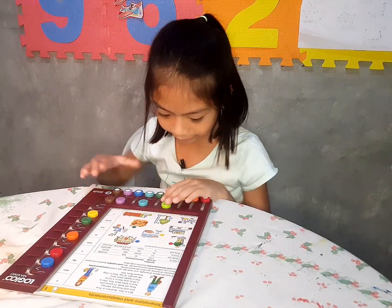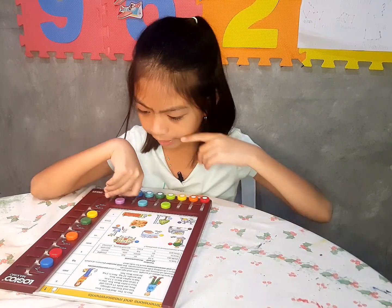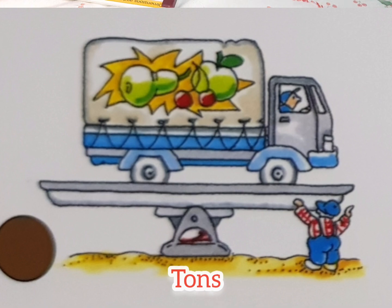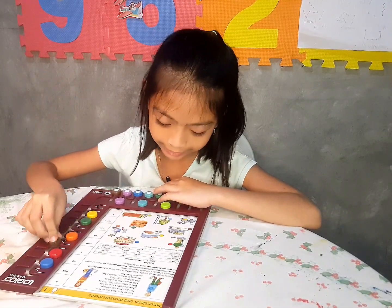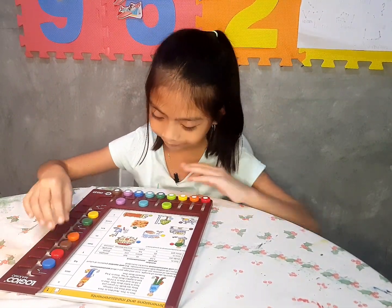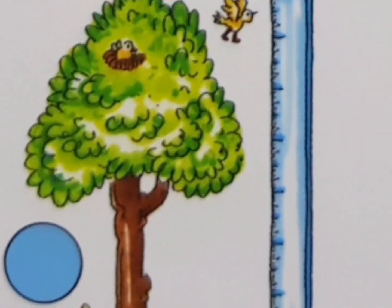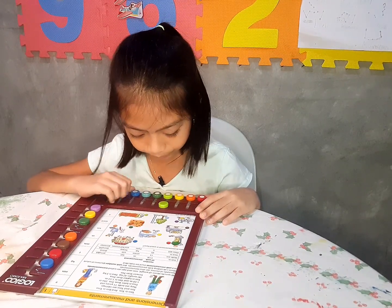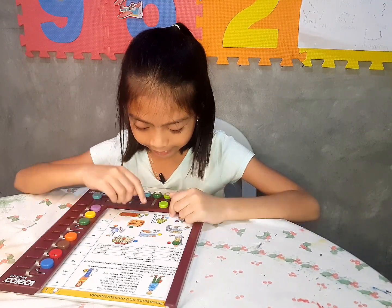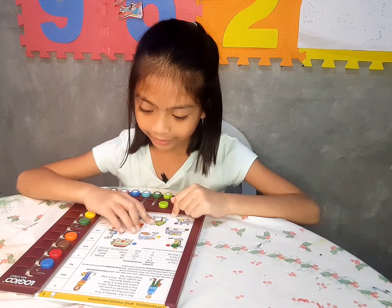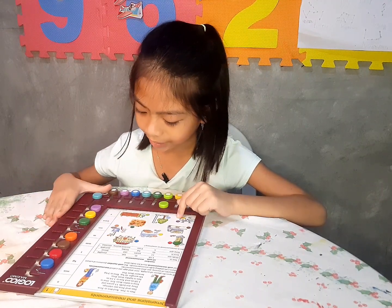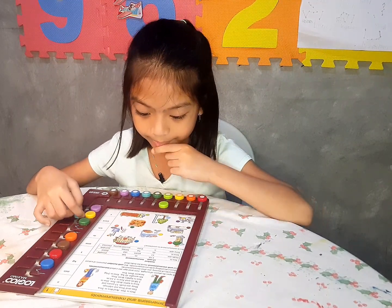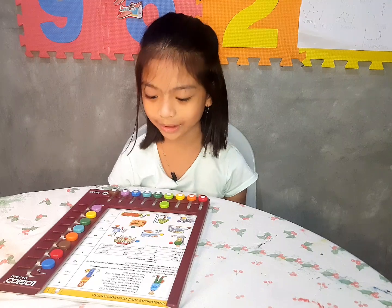Next one is brown, and I think it weighs tons. Next one is light blue, and it looks like it's showing how tall something is. Maybe it's m. M means meter.